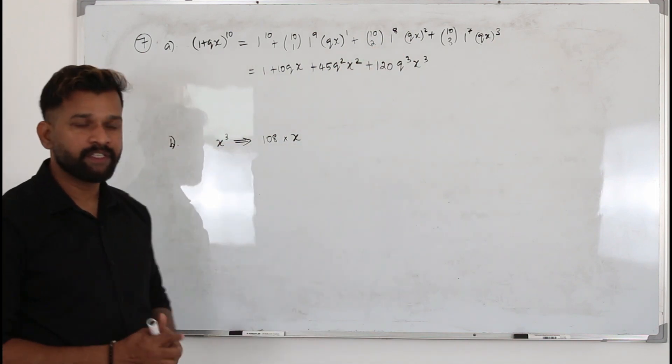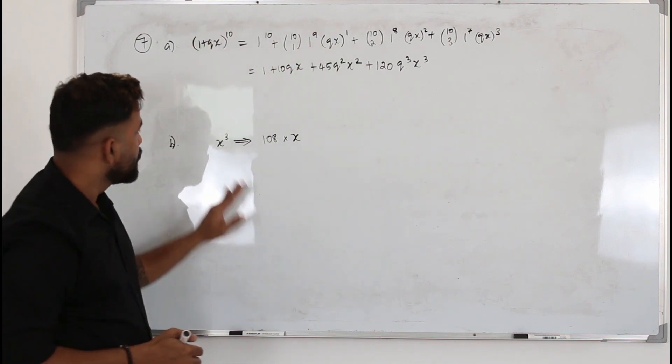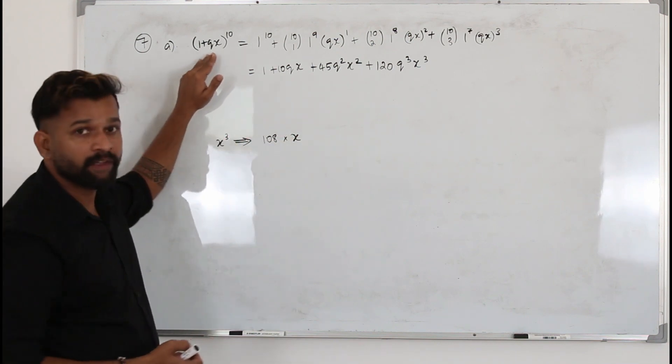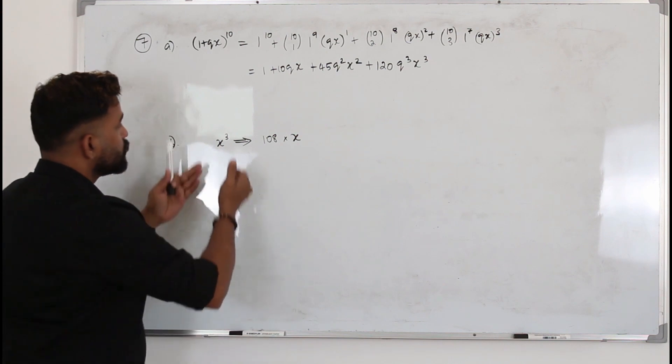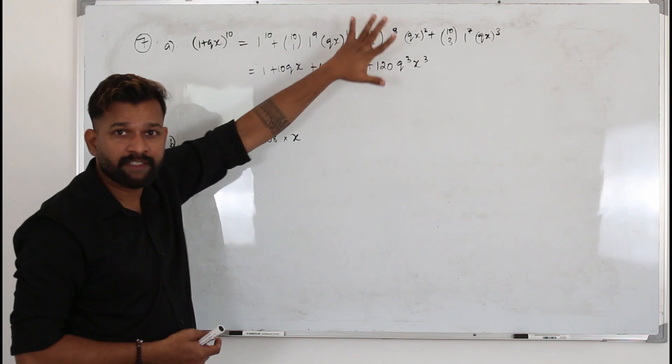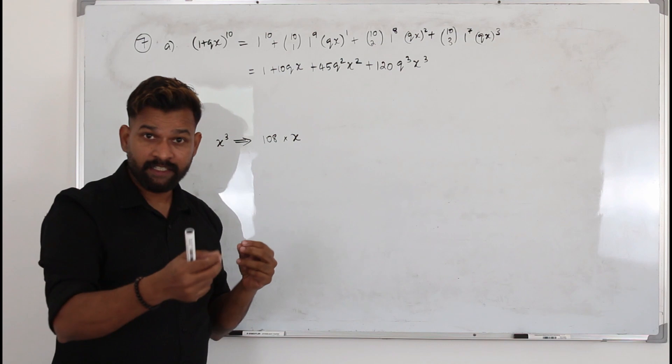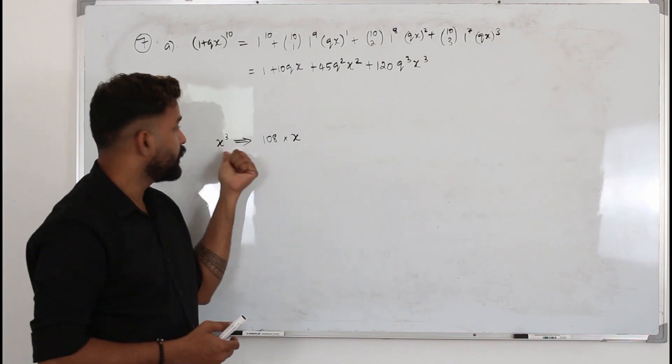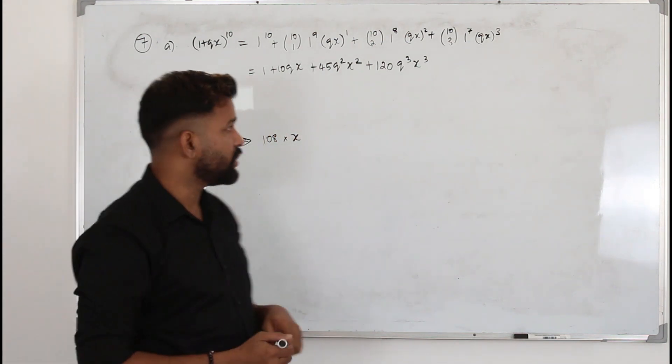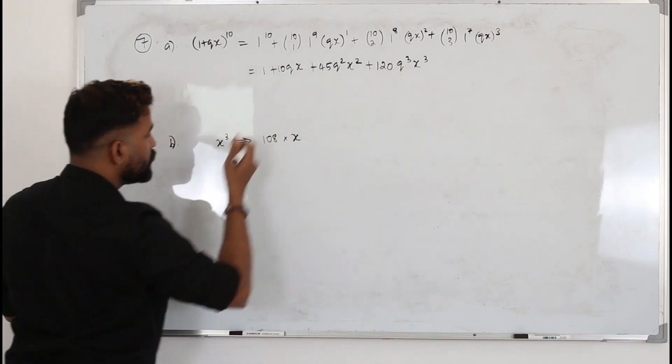Now part b of the question says the coefficient of x³ in this expansion is 108 times the coefficient of x. So they want you to find the value of q. Here usually when they talk about, let's say you don't have this part, part a is not there, only you have this question, we need to use the general term we learned to find the coefficient of x³ and x instead of writing the whole expansion. Because the general term is much easier. But here you don't need to do that. Because we have the expansion already.